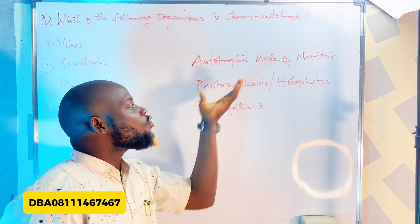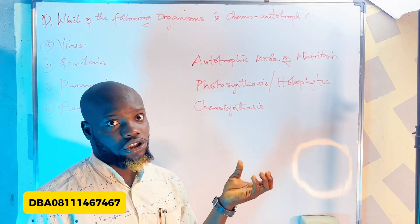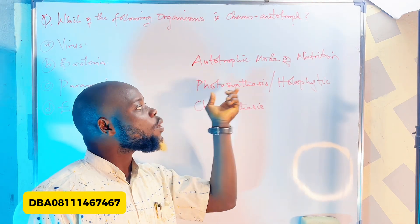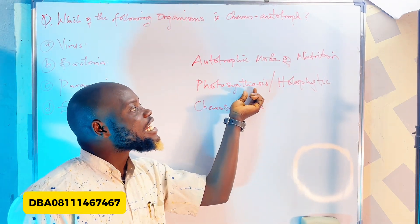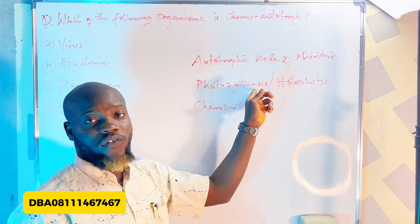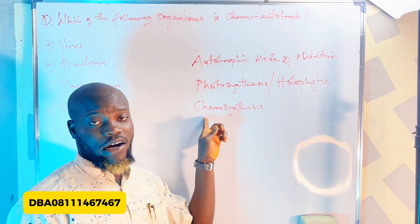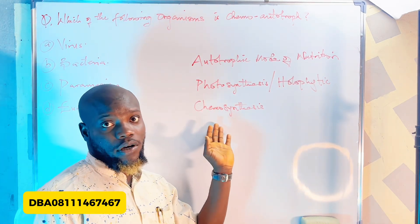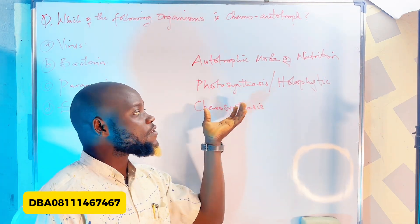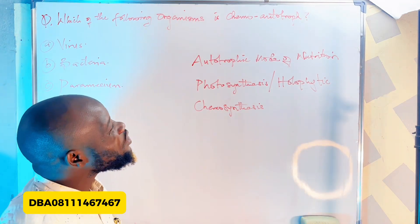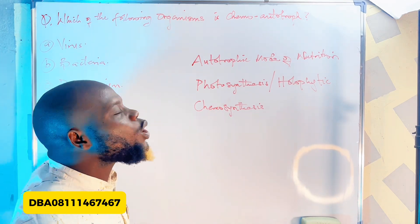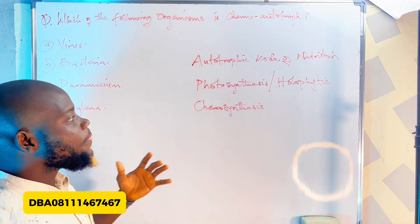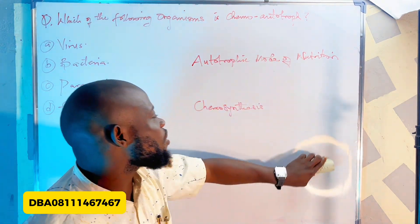The word 'synthesis' means production. 'Photo' means light, so photosynthesis refers to organisms that use light to manufacture their food. 'Chemo' means chemical, so chemosynthesis refers to organisms that use chemicals to manufacture their food. The question is asking which organism uses chemical — not light — to manufacture its food, which is chemo autotroph.